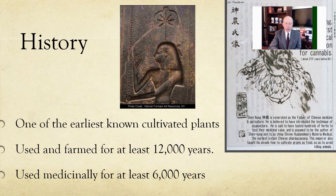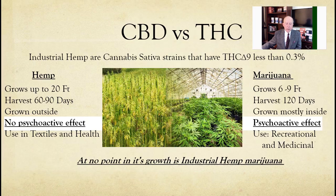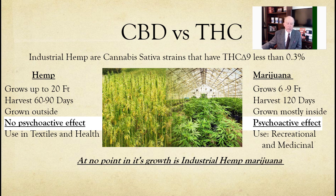Hemp is one of the earliest known cultivated plants and has been available for thousands of years. Now, CBD versus THC: THC is the tetrahydrocannabinol in marijuana that causes the high. CBD oil does not cause a high. Hemp plants grow up to 10 feet tall; marijuana plants grow up to 7 feet tall. Hemp has been used for thousands of years for rugs, clothing, ropes, and all kinds of other products.